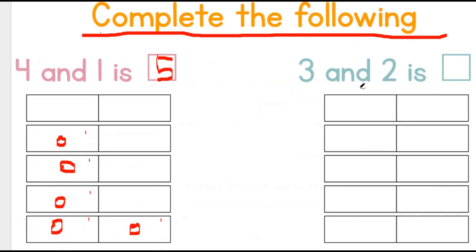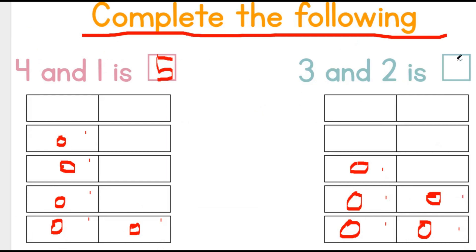Let's look at the second example. Three and two is... One, two, three. One, two. How many does this come to? One, two, three, four, five. That means that two and three make five.